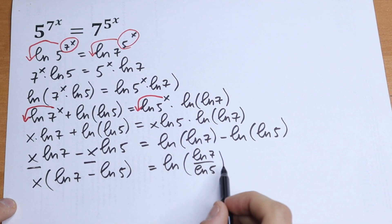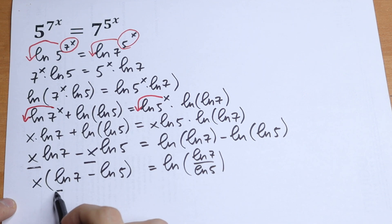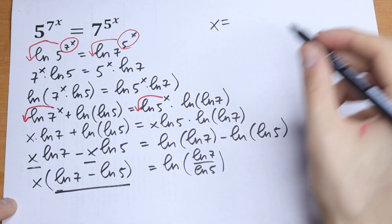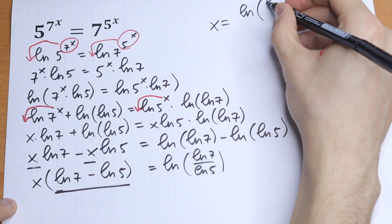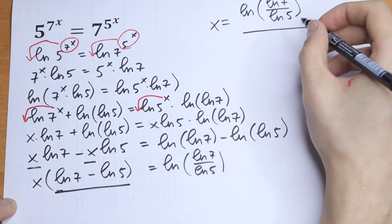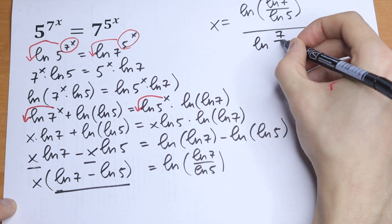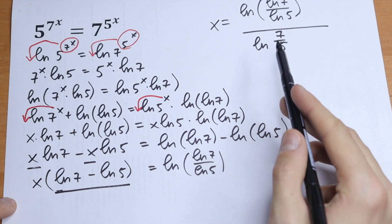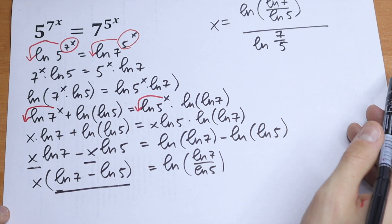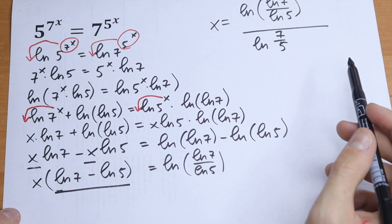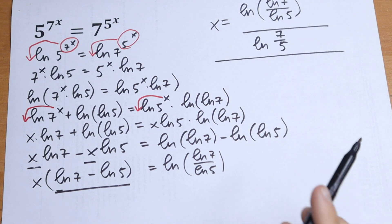The last step: we have x on the left and we divide both sides by the bracket. So as a result we will have x equal to natural log of natural log 7 over natural log 5, all over natural log 7 over 5. And of course we can simplify this a little bit — if you're interested, you can simplify it by yourself. So if you agree with this, if you disagree, or maybe you have a faster method, write your suggestion and your answer in a comment. Thank you for watching and see you in the next videos.